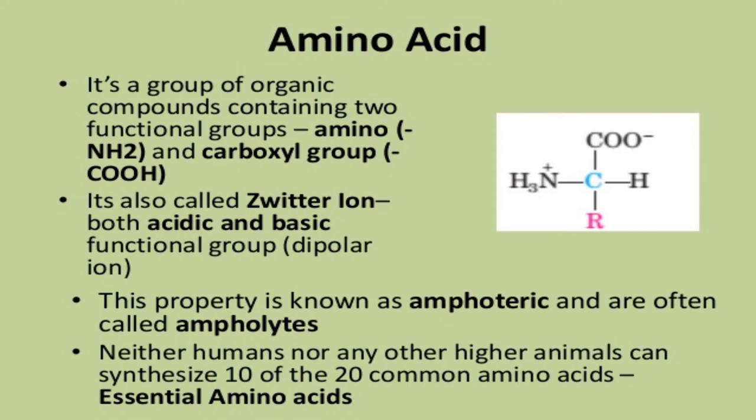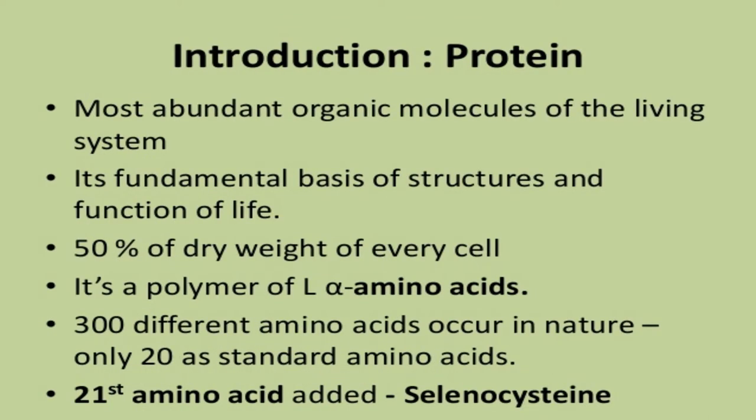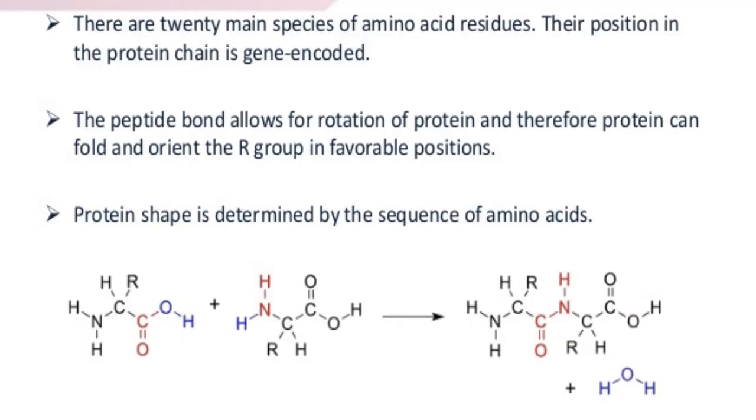Protein is the most abundant organic molecule of living systems and is the fundamental basis of structure and function of life. It comprises 50 percent of the dry weight of every cell. Protein is a polymer of L-alpha amino acids. 300 different amino acids occur in nature, but only 20 are standard amino acids. The 21st amino acid added is selenocysteine.